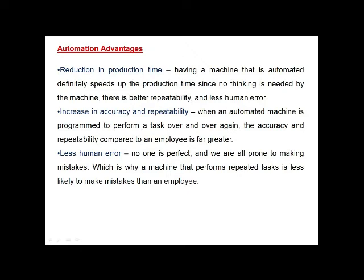Now we discuss the advantages of automation — what is the need for automation in manufacturing industries? First, reduction in production time: having a machine that is automated speeds up production time since no human thinking is needed, resulting in better repeatability and less human error. Second, increase in accuracy and repeatability: when an automated machine is programmed to perform a task over and over again, the accuracy and repeatability compared to an employee is far greater. Third, less human error: no one is perfect, and machines that perform repeated tasks are less likely to make mistakes than an employee.